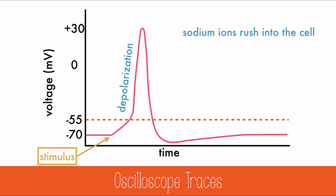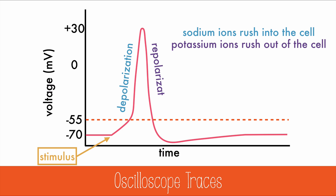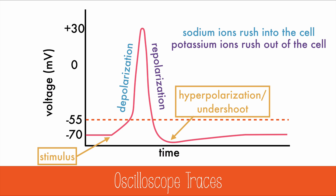This polarity change opens the potassium gate, which allows potassium ions to rush out of the cell, which rapidly repolarizes the inside to a negative charge. This can often become more negative than negative 70 millivolts, and is called hyperpolarization or undershoot.